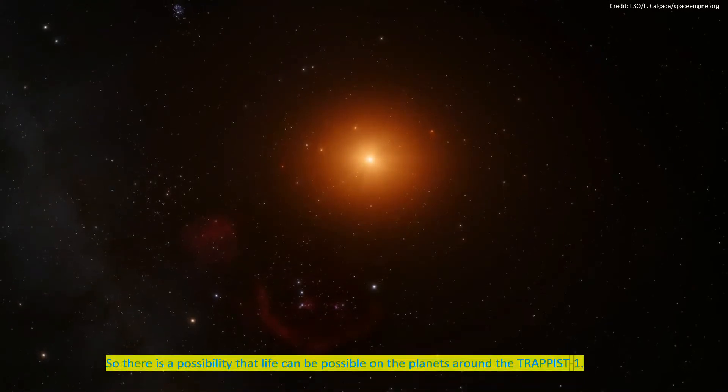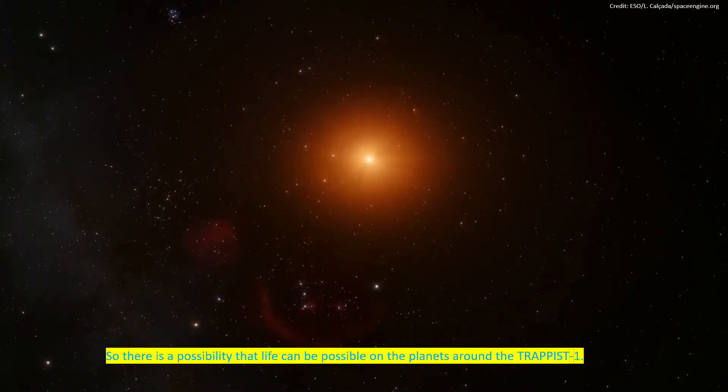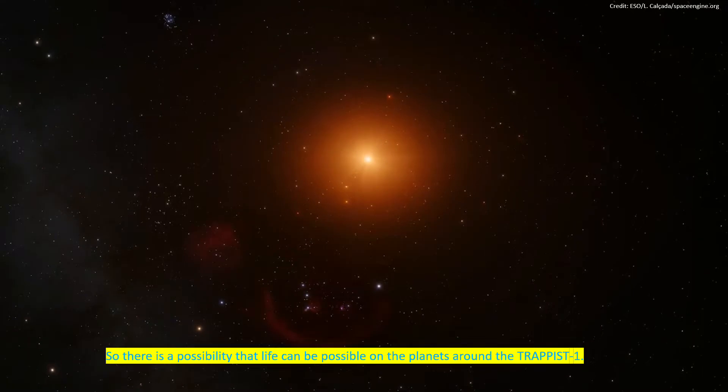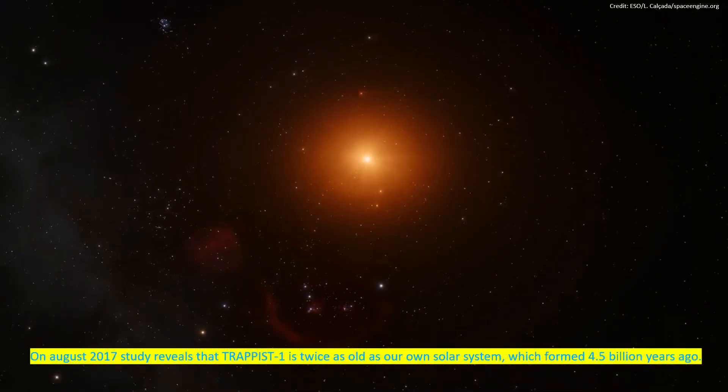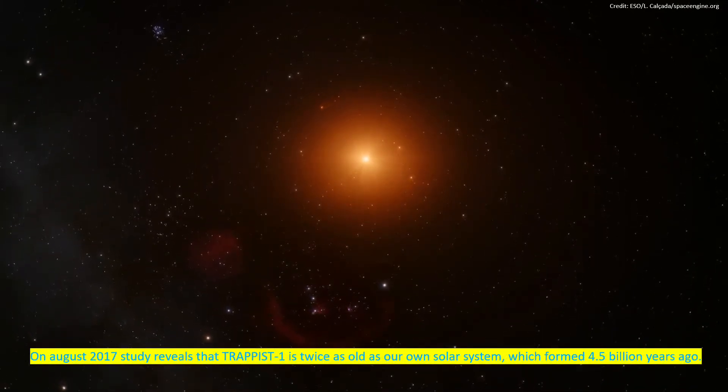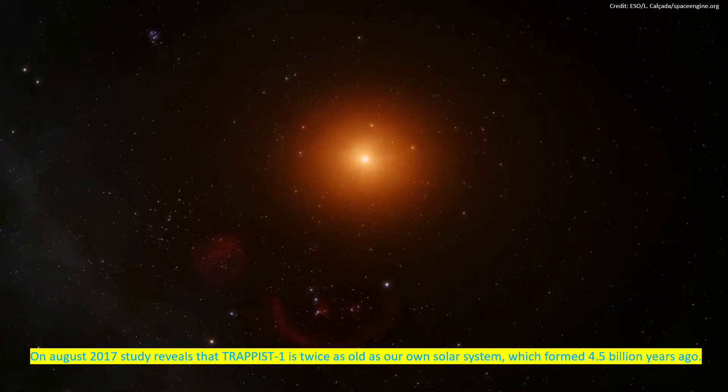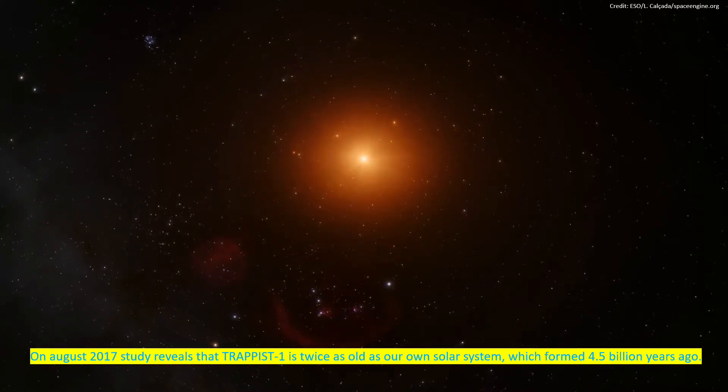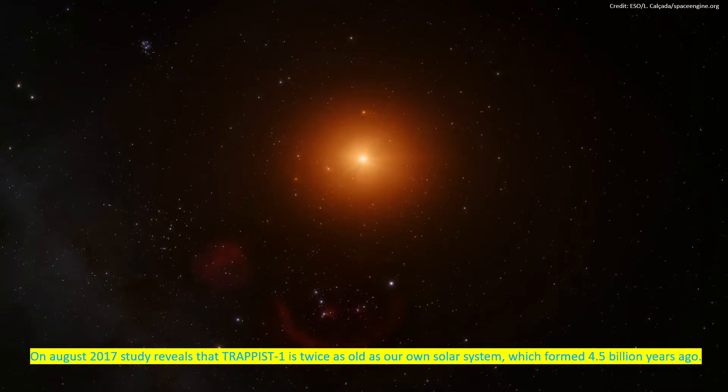So there is a possibility that life can be possible on the planets around TRAPPIST-1. On August 2017, a study revealed that TRAPPIST-1 is twice as old as our own solar system, which formed 4.5 billion years ago.